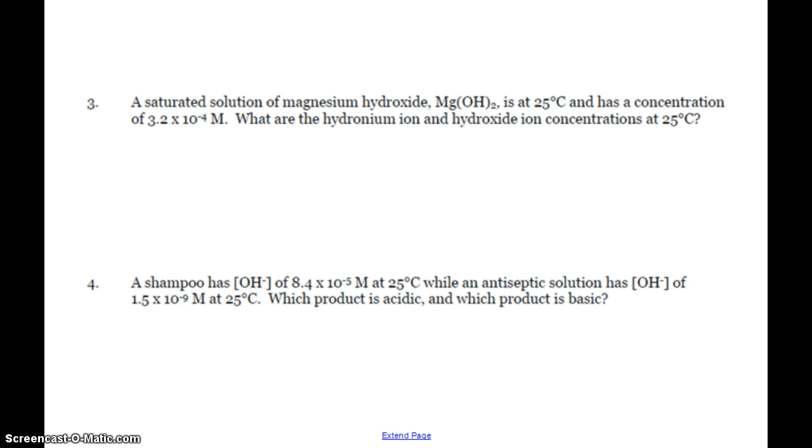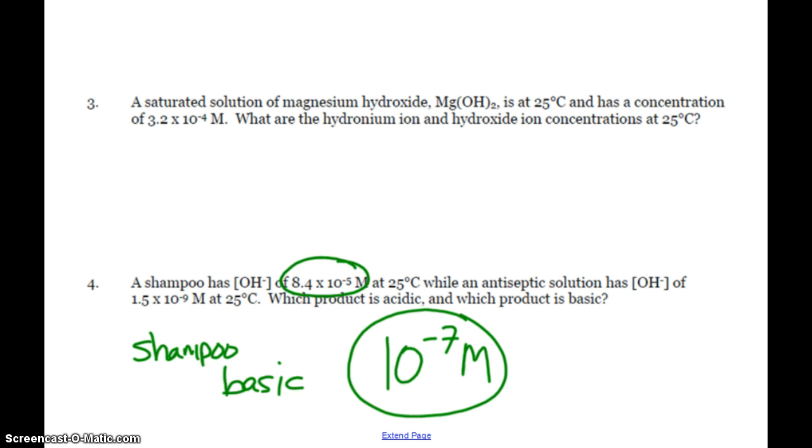Down here, shampoo with a hydroxide, 8.4 times 10 to the negative 5. Remember, the middle point is 10 to the negative 7. That's neutral. If hydroxide is greater than that concentration, we have a base. So 10 to the negative 5 is greater than 10 to the negative 7. So that shampoo is basic. And the antiseptic solution has a hydroxide concentration of 1.5 times 10 to the negative 9. That's less. So the antiseptic is acidic.